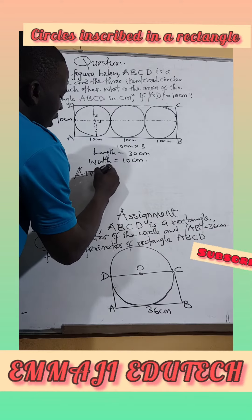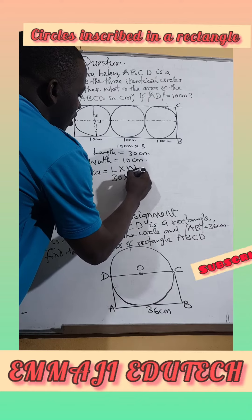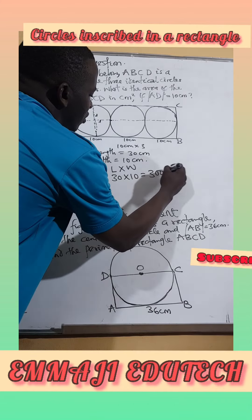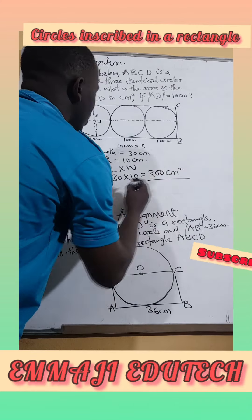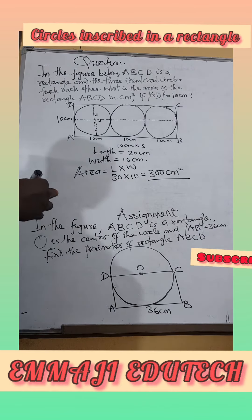So the area of the rectangle should be length times width which is 30cm times 10cm which is 300cm squared. That is the area of the rectangle ABCD.